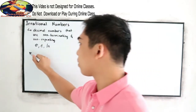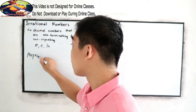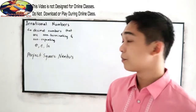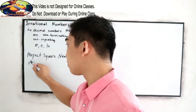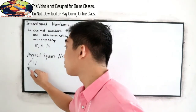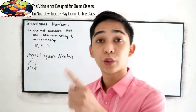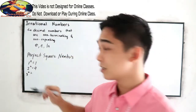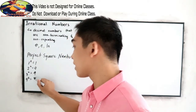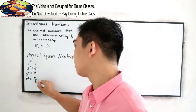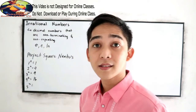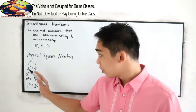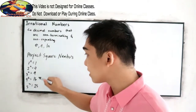We have what we call perfect square numbers. Perfect square numbers are: 1 squared = 1; 2 squared = 2×2 = 4; 3 squared = 3×3 = 9; 4 squared = 4×4 = 16; and 5 squared = 5×5 = 25. So the perfect square numbers are 1, 4, 9, 16, and 25.